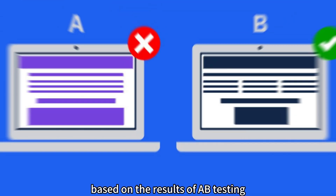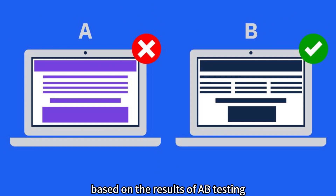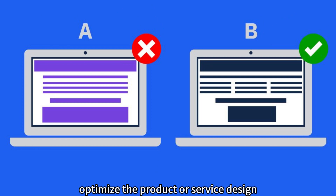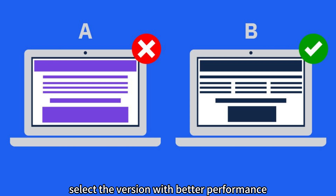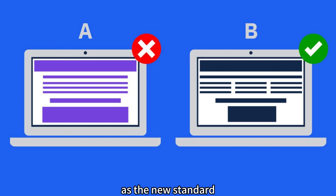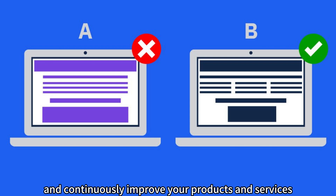Implement Optimizations. Based on the results of A-B testing, optimize the product or service design. Select the version with better performance as the new standard and continuously improve your products and services.